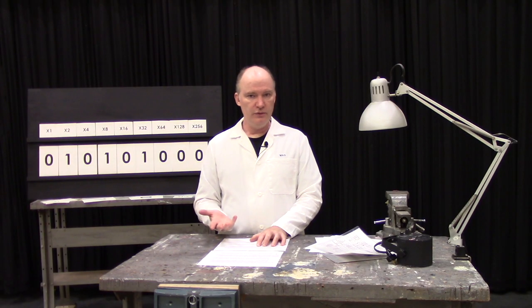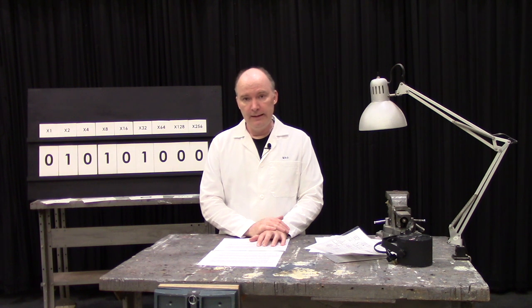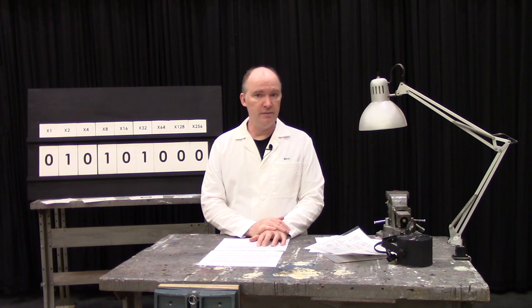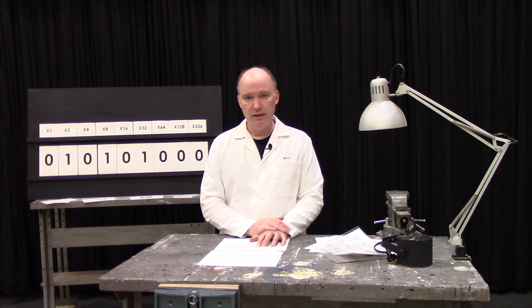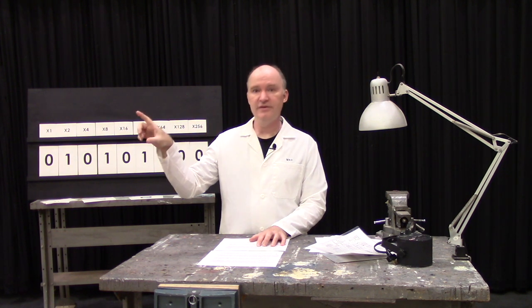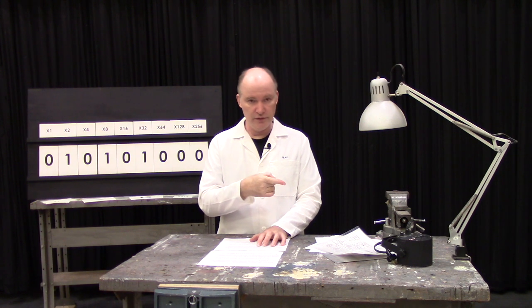You can also use Excel to convert a decimal number into binary using their imaginatively named DEC2BIN function. Here, however, is where we encounter one of the stumbling blocks when using binary. There is not universal agreement as to which way you should count. Sometimes you start with the smallest multiple and it increases as you go from left to right. That's what we calculated and what we would use to program this light.